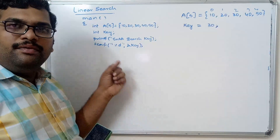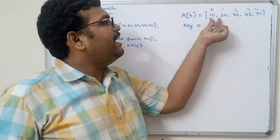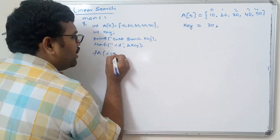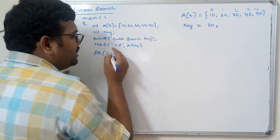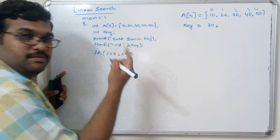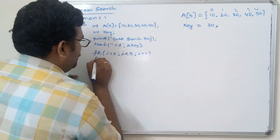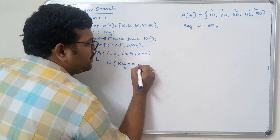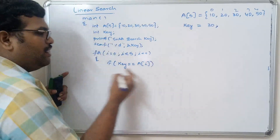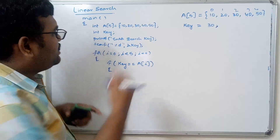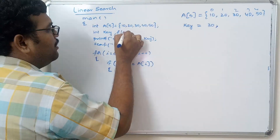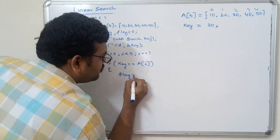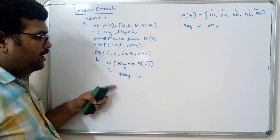After reading the key, we have to compare it with each and every element in the array. For that purpose I use a loop, repeating the process from the 0th element to the last element, which is index 4. In every iteration I compare the key value with a[i]. To save whether the element is found, declare one more variable called flag, initialized to 0.